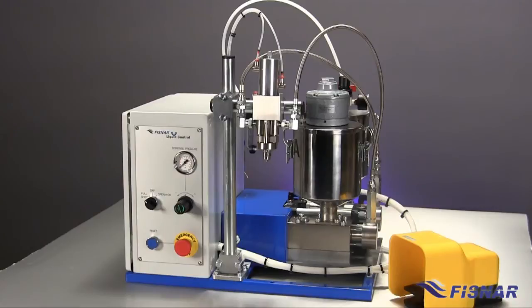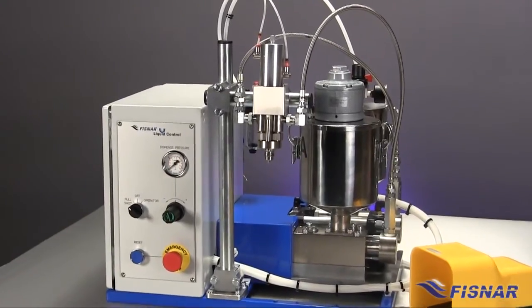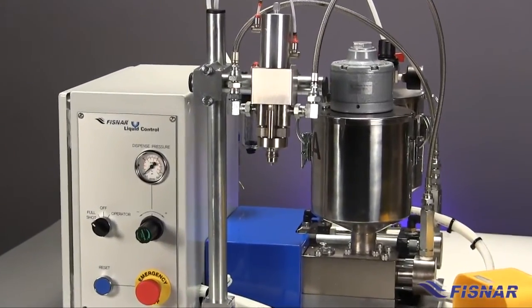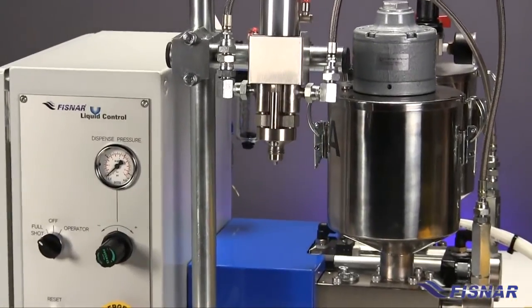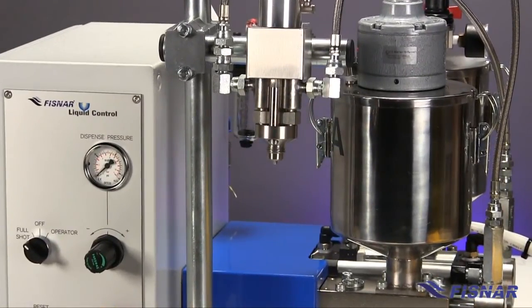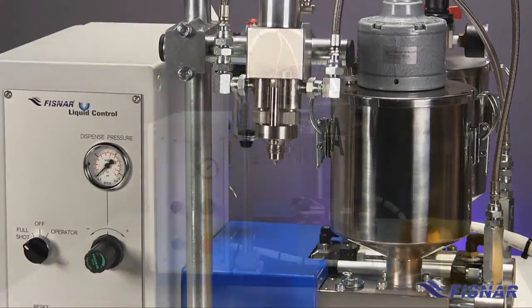Fluid held in the tanks is gravity-fed into the metering pumps, which meter and deliver the correct ratio and shot size to the twin mixer, fed by industrial hoses. The twin mixer valves include an adjustable snuff-back non-drip feature.